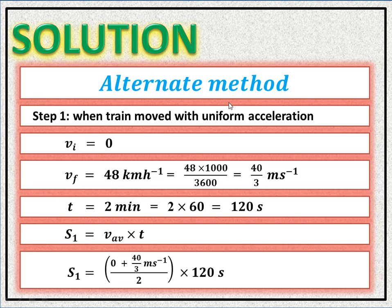In Step 3, the train moved with uniform retardation until its velocity became zero within three minutes. We calculate the distance for each step. Step 1: the train moved with uniform acceleration.